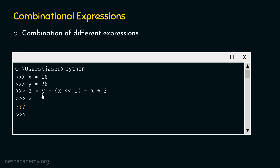y is 20, so the expression becomes 20 + 20 - 30. Plus and minus have the same precedence, so we go left to right: 20 + 20 = 40, and 40 - 30 = 10. So z is pointing to value 10. Typing z and hitting Enter gives us 10 as the result.